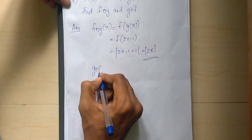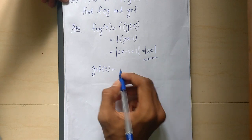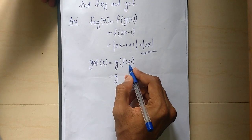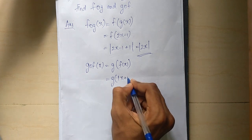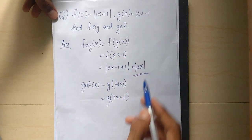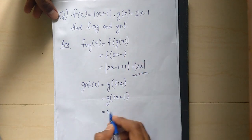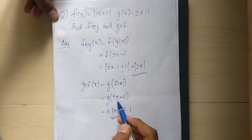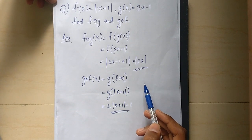g of f of x means we substitute f of x into g. So g of f of x: the bracket becomes f of x which is mod x plus 1. g function gives 2 times that minus 1, so g of f of x equals 2 times mod x plus 1 minus 1. So this is g of f of x. F of g of x and g of f of x are not the same thing — they are different types.